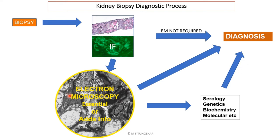Electron microscopy may result in further questions that may be asked, and further investigations may be necessary. As a result of electron microscopy, there may be serological, genetic, biochemical, molecular biology investigations, or simply more history required.